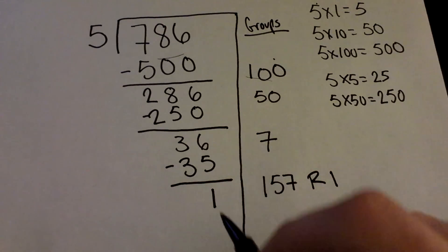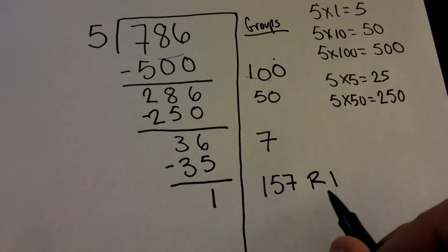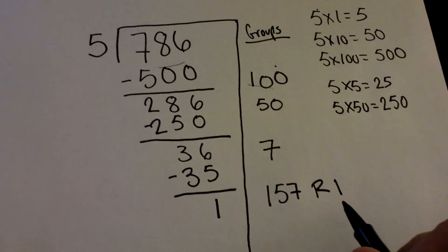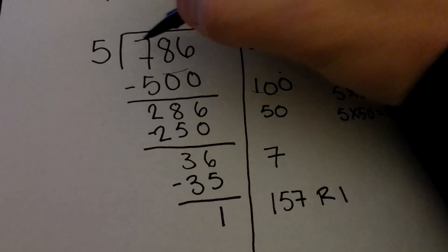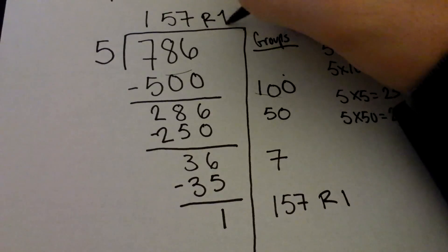We cannot break that 1 up into any more groups of 5. So therefore, it's left over. In this case, it becomes our remainder of 1. What we've demonstrated here is that 786 divided by 5 equals 157 remainder 1.